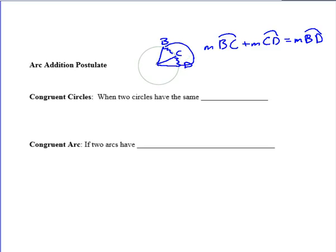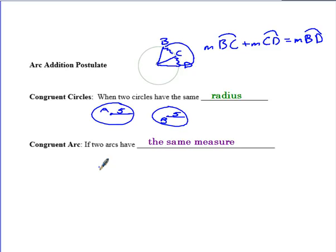Congruent circles are when two circles have the same radius. If I draw two separate circles, this one's circle A, this one's circle B. If this had a radius of 5 and this had a radius of 5, I could say those two circles are congruent. We can say circles are congruent. We can also say that arcs are congruent. That just means that two arcs have the same measurement.